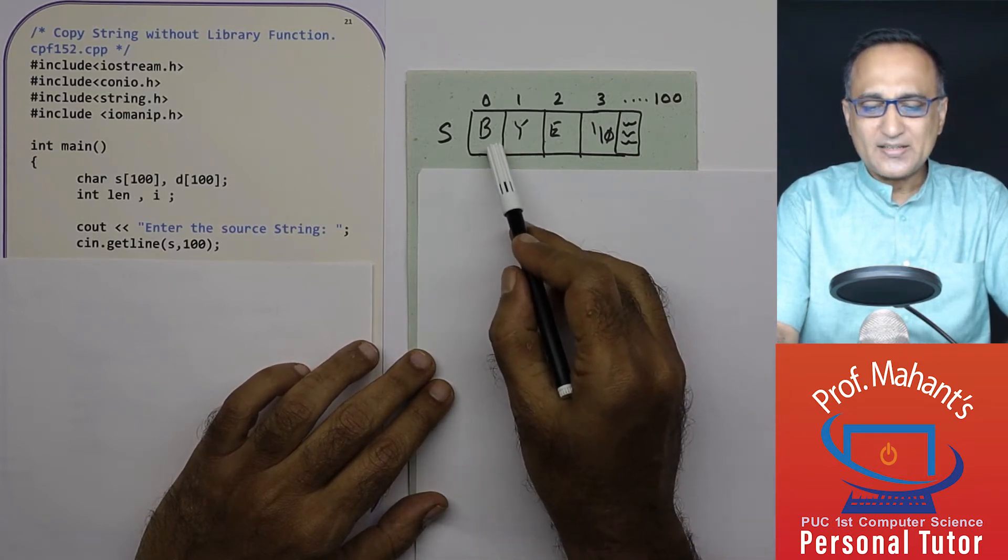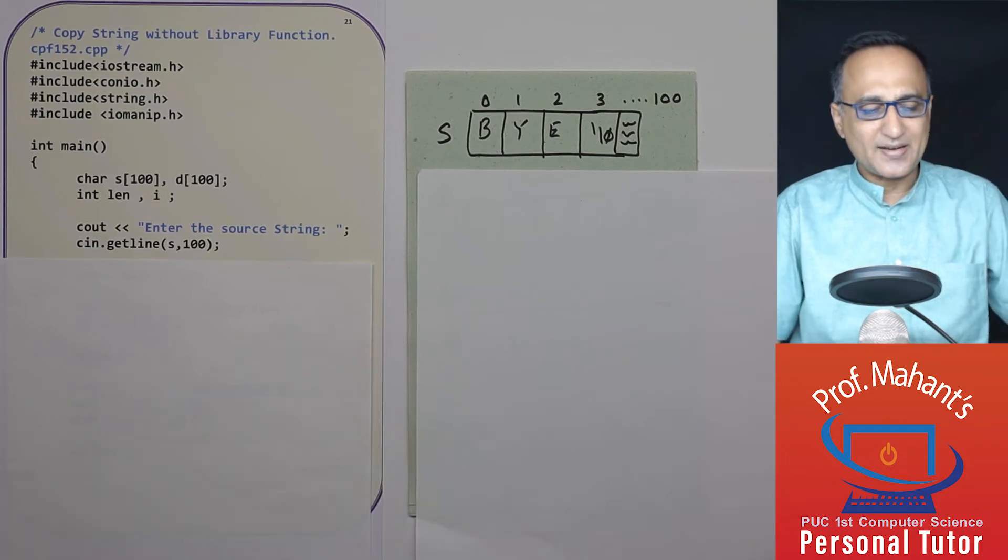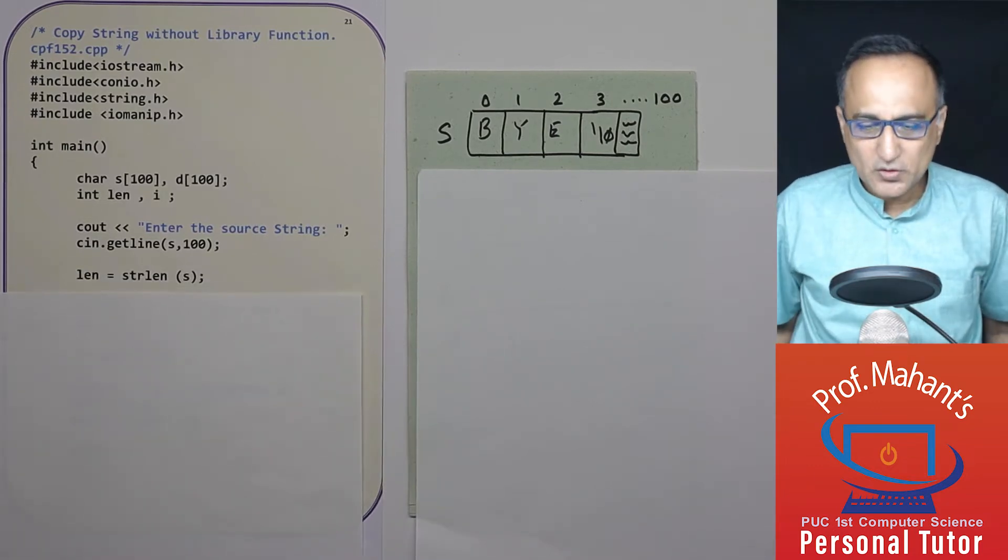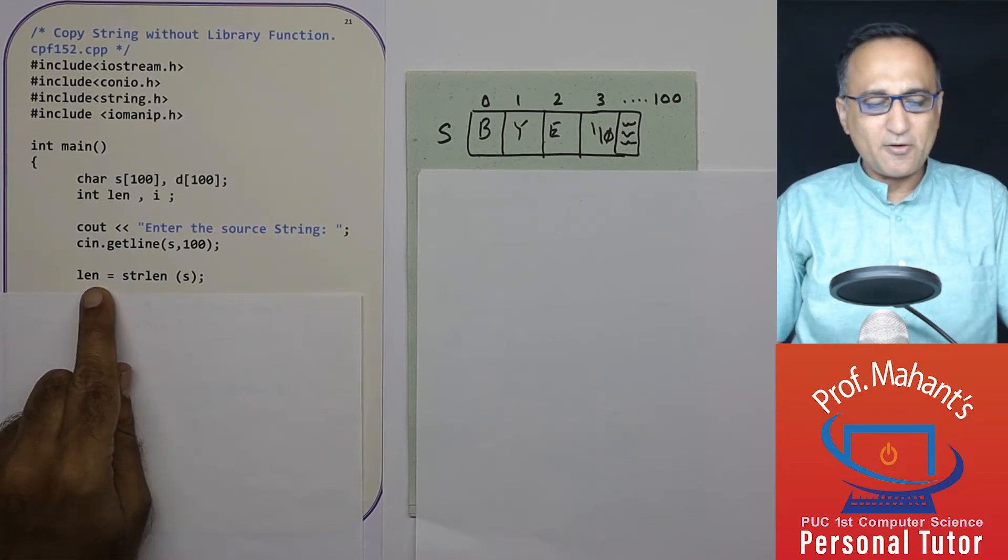So the length of the source string happens to be three characters. The first thing I do is I calculate the length of the source string. In this case the value of length is going to be equal to three.